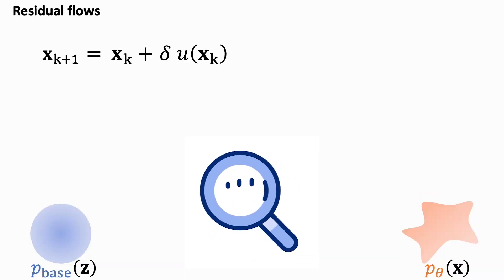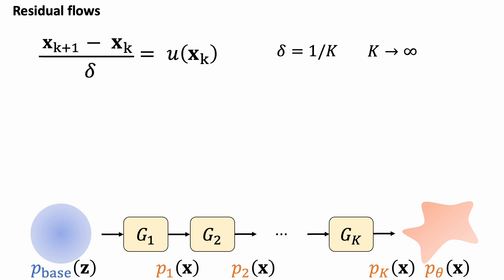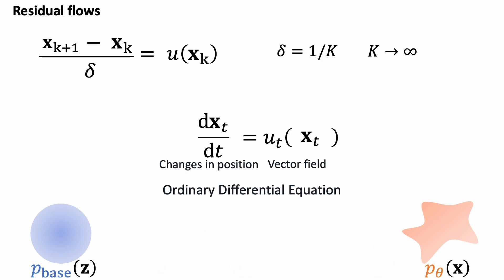Let's take a closer look of the residual flow method. It gradually transforms a simple base distribution into a data distribution via k residual layers. Moving these terms around, we get something that looks like a derivative. When we increase the number of layers k to infinite, we get an ordinary differential equation, saying that the change in position of a sample follows the vector field. Our goal is to represent this time-varying vector field with a neural network with parameter theta. This is called a neural ordinary differential equation.